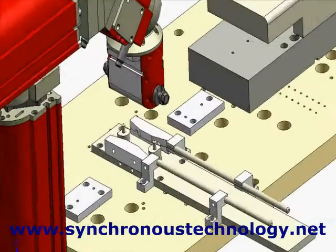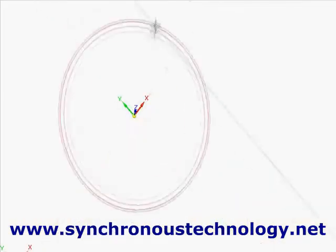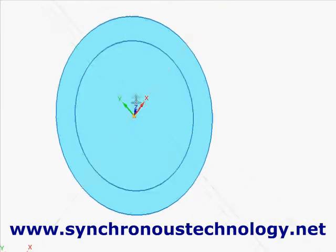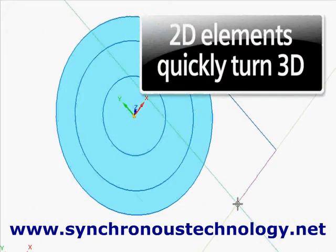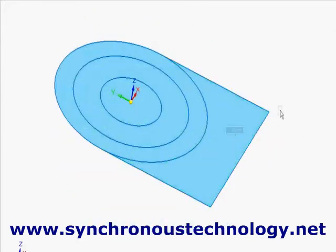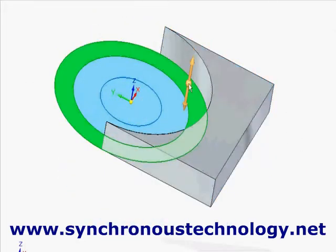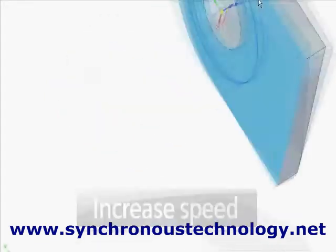Here we are going to create a new gripper for our robot. Starting with sketches to define the shape of the part, watch as these 2D elements quickly become a 3D model. A key to design productivity is to reduce the number of direct commands — the fewer the steps, the faster the process.